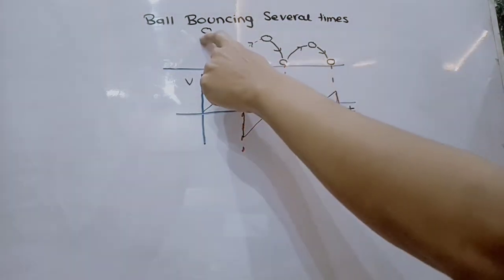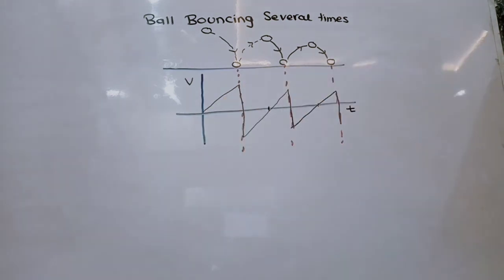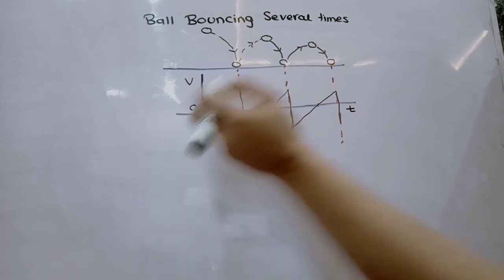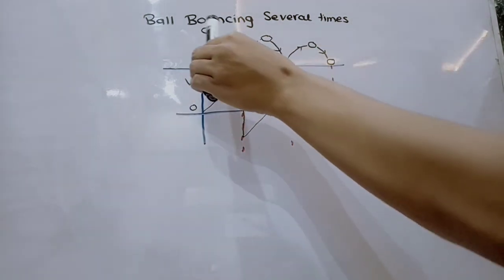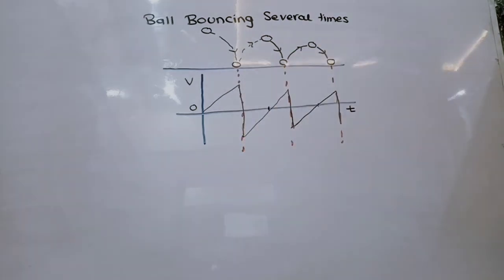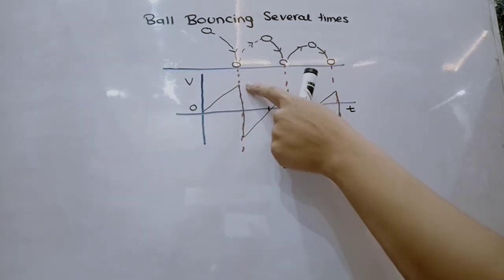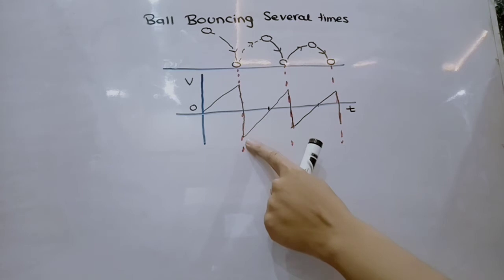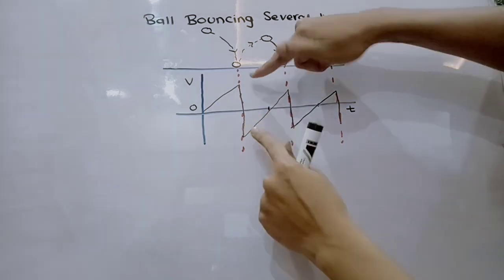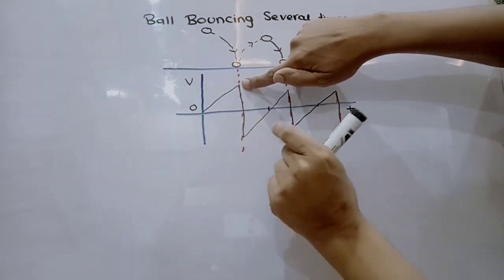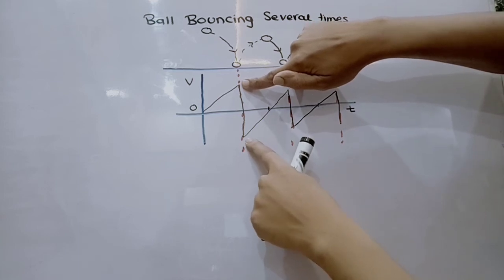The ball is thrown from rest at velocity equal to zero, shown over here. It moves down towards the ground with constant acceleration of 9.81. When it impacts on the ground and changes its direction, the velocity, as it is a vector quantity, changes its direction at the same time. We are assuming that it takes zero seconds.